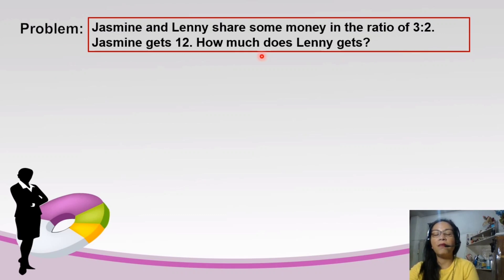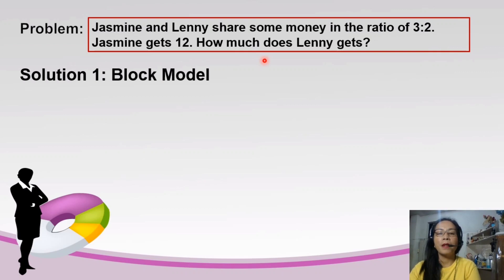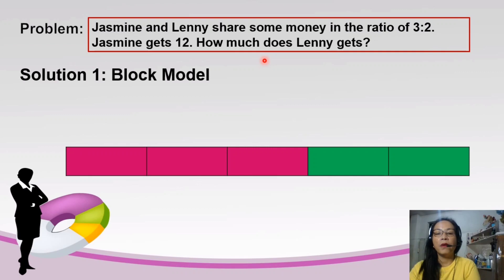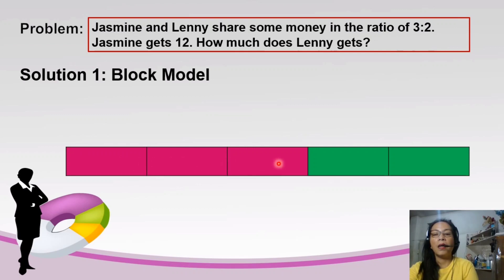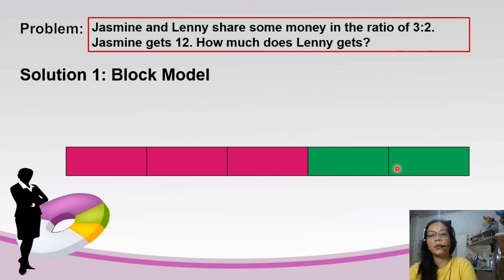In this first solution, let's make use of a block model. I have here five blocks with color pink and color green. We have three blocks for pink and two blocks for green. We have five blocks because they contain two different colors representing the ratio 3 is to 2 — the pink represents the 3 and the green represents the 2.